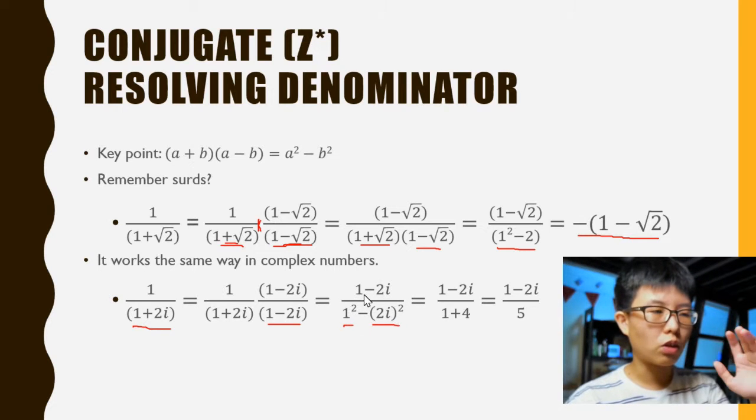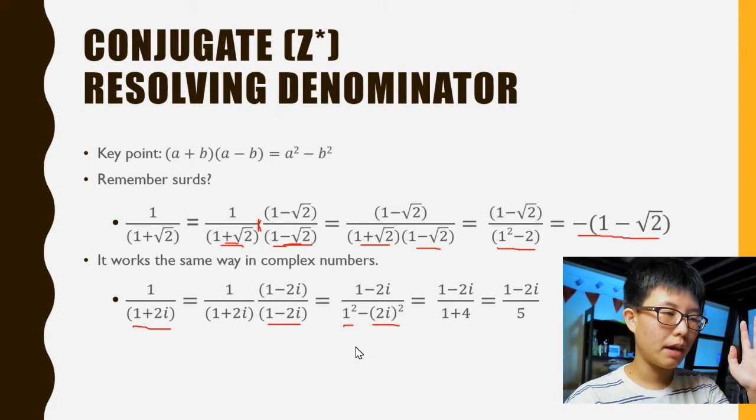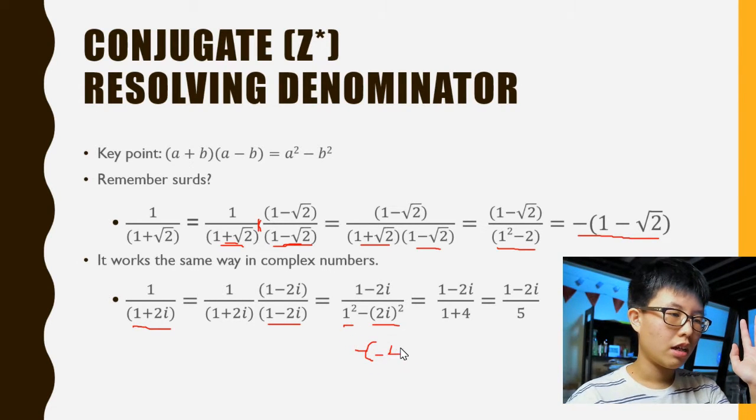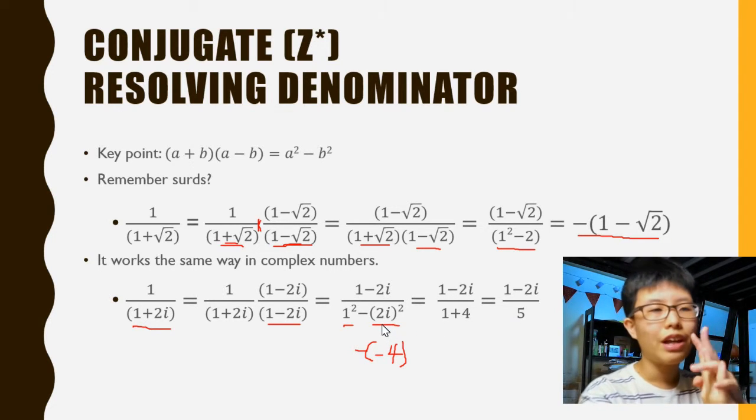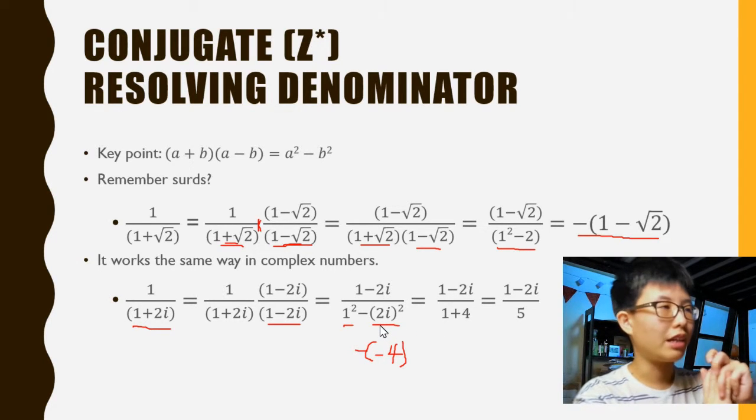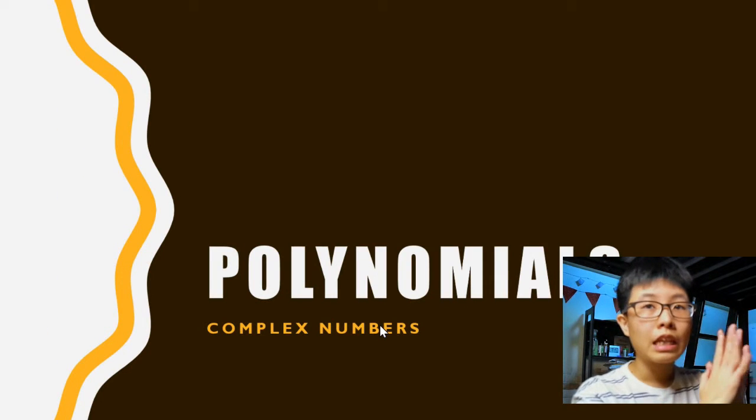You have to look at it carefully. 1² is just 1, which is simple, and then we're actually minusing -4. So 2² becomes 4, and i² becomes -1, so we're minusing -4. Hence we get 1 + 4, and the denominator is 5. We have gotten rid of the complex number in the denominator with the use of conjugates.